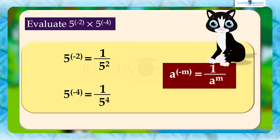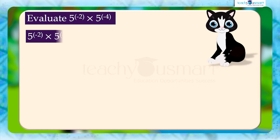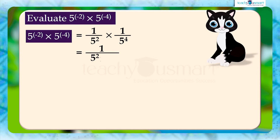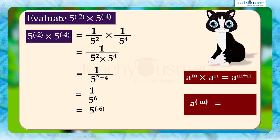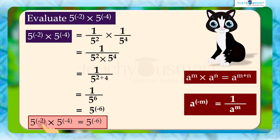By taking the product, we can write 5 raised to minus 2 multiplied by 5 raised to minus 4 equals 1 by 5 squared multiplied by 1 by 5 raised to 4, which equals 1 divided by 5 raised to 2 plus 4, equals 1 by 5 raised to 6, equals 5 raised to minus 6. That is, 5 raised to minus 2 multiplied by 5 raised to minus 4 equals 5 raised to minus 6.